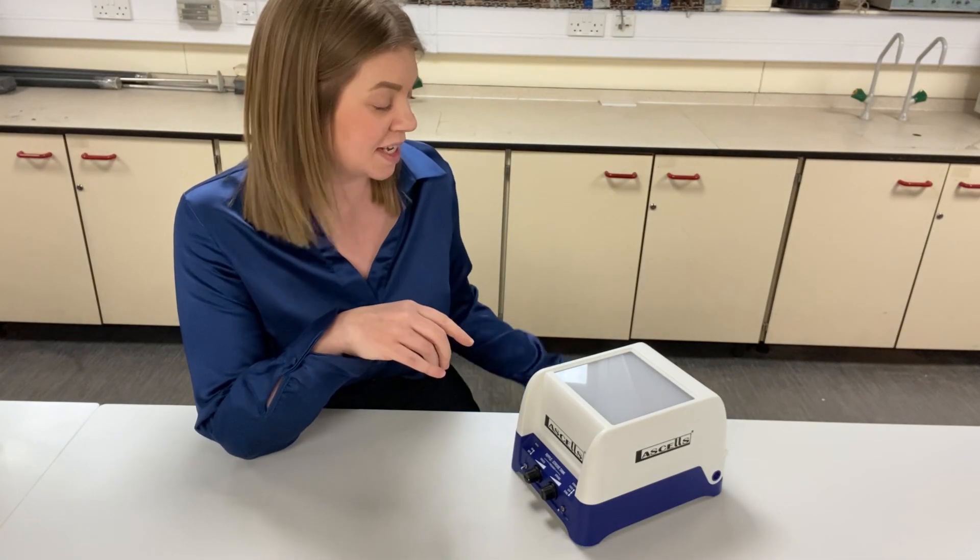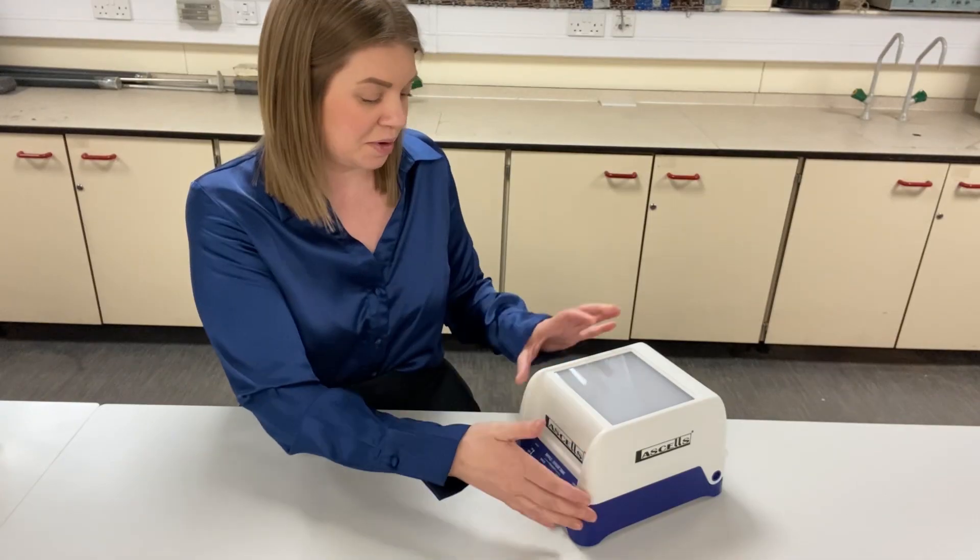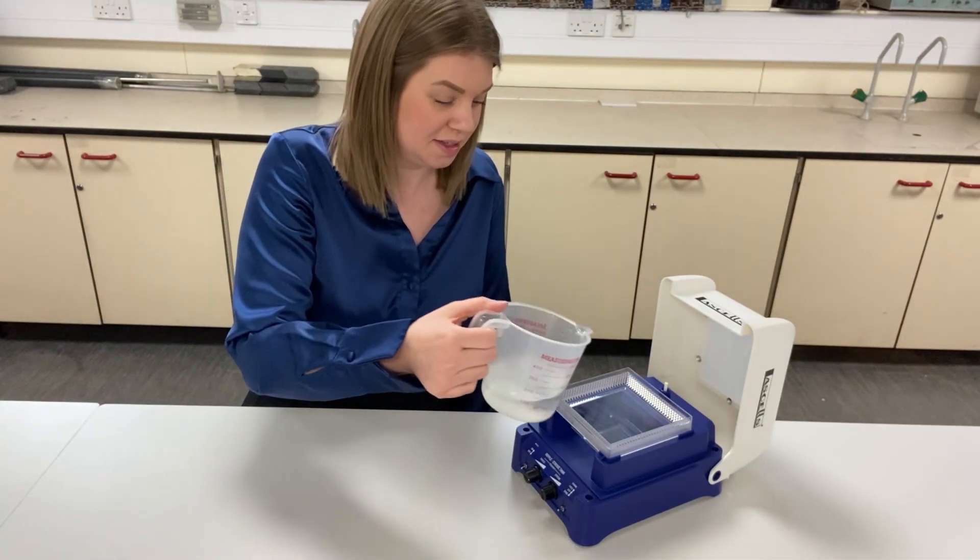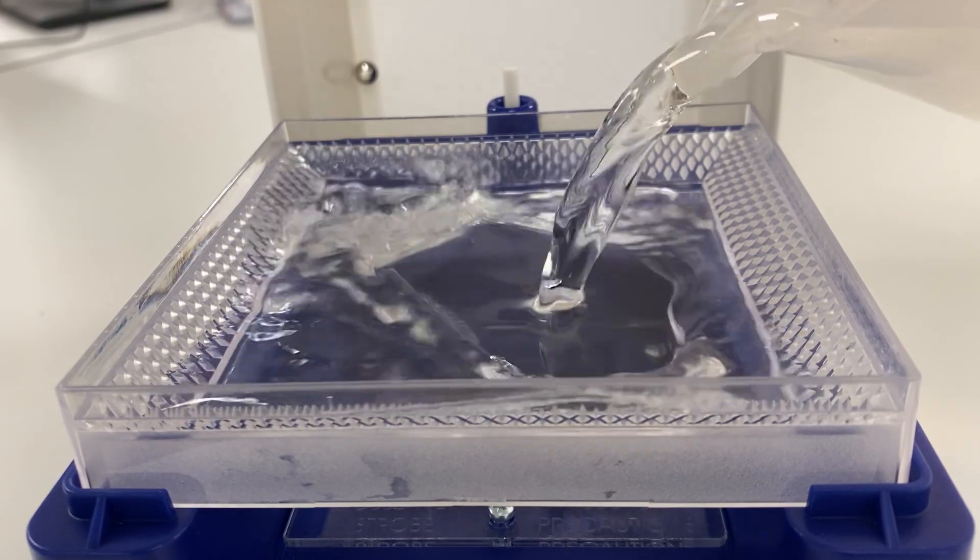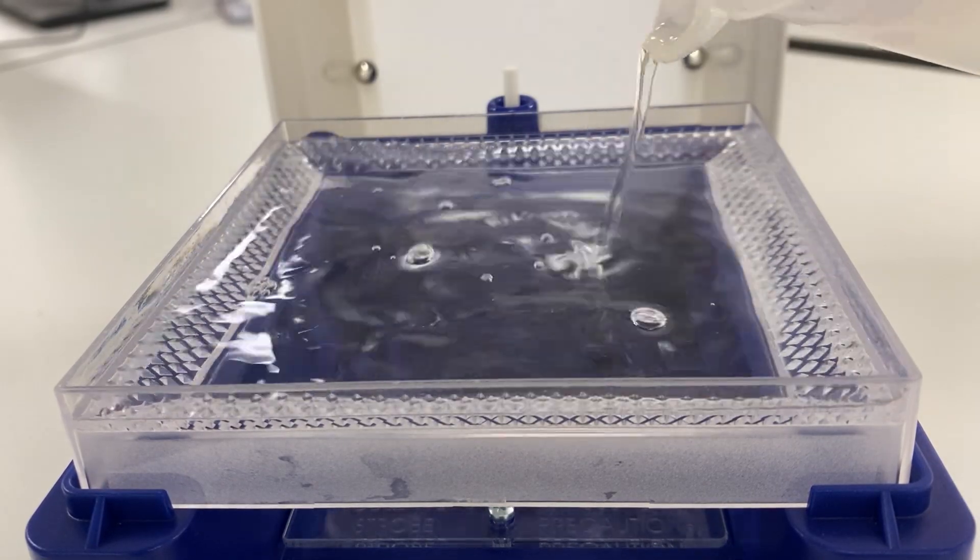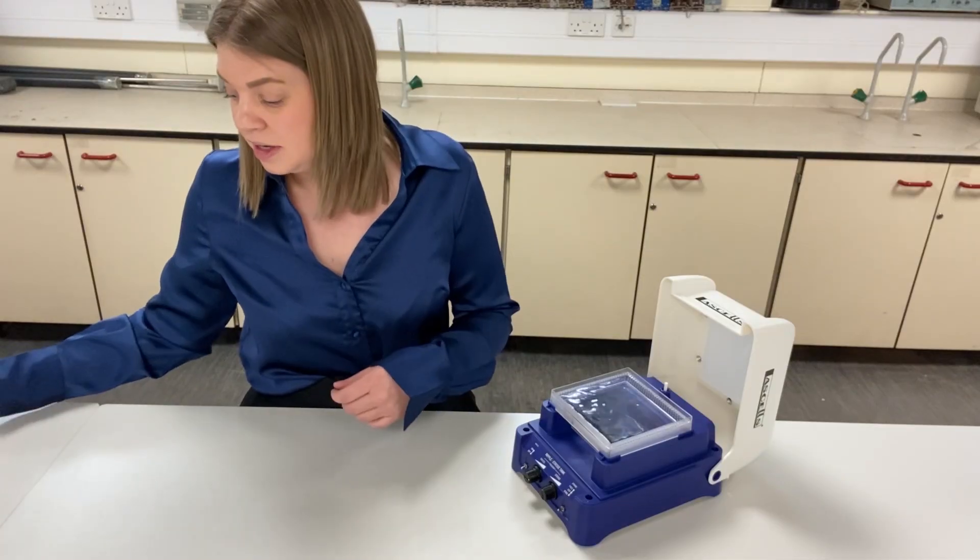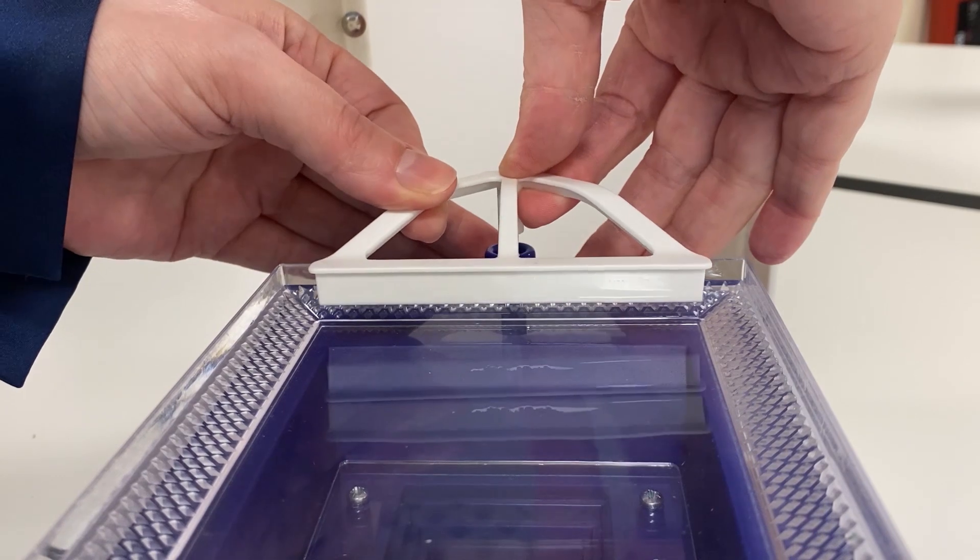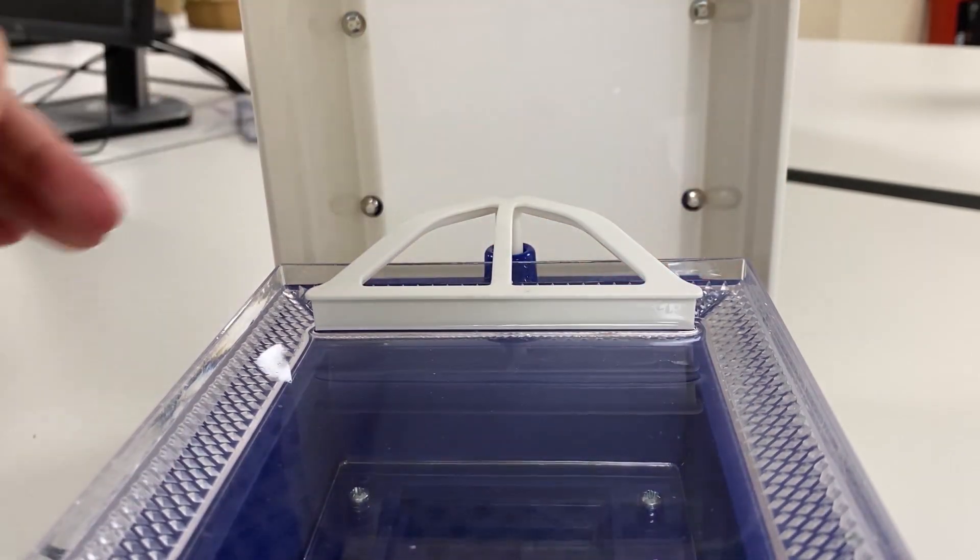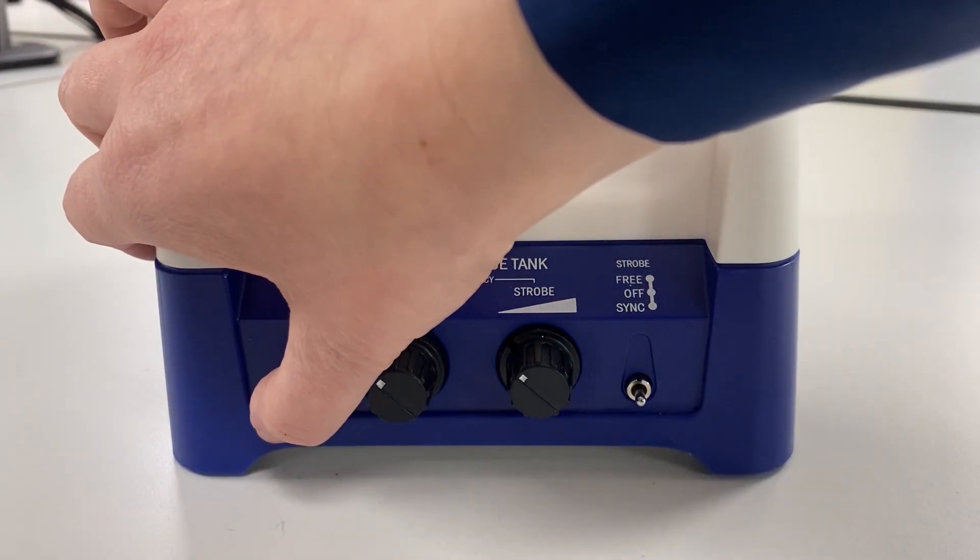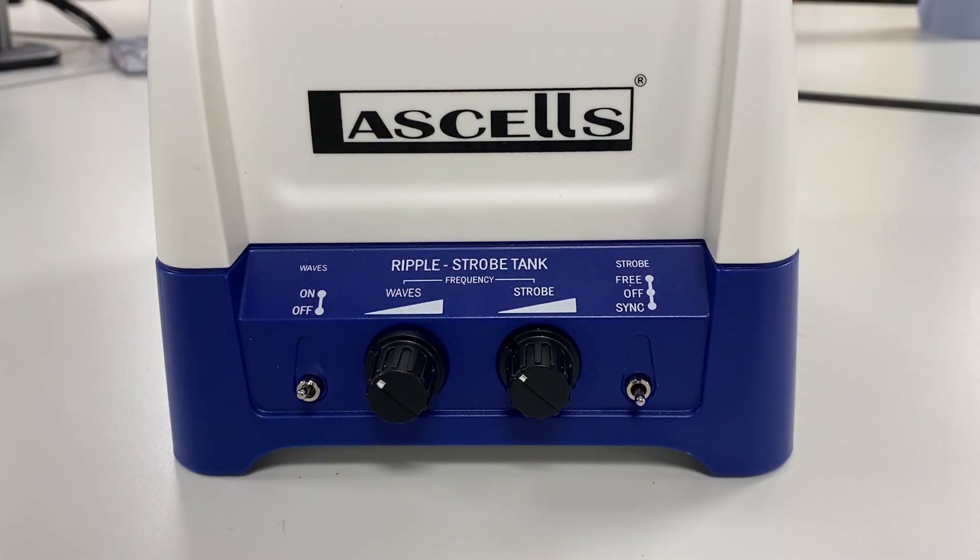For this experiment I'm going to need plane waves. So to get the ripple tank set up, I'm going to plug it in, uncover the tank and fill it up full of water. You're about three quarters full. I'm then going to use the plane wave dipper and attach that to the post, and I want the bottom of the dipper to just be touching the surface of the water.